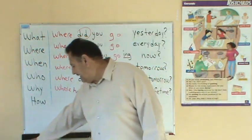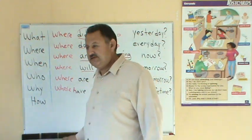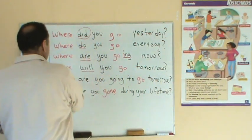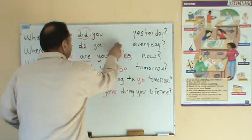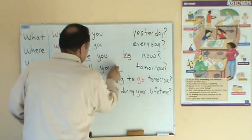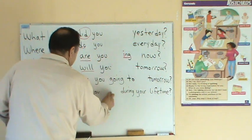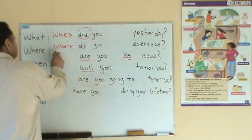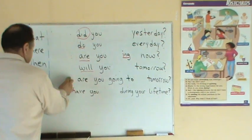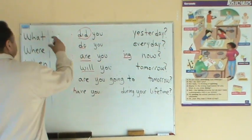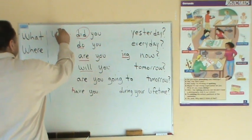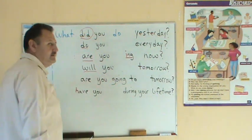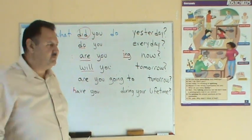And we can change the verbs and change the question words. This is 'go' — we use 'where.' But let's take another common verb and change the question words. What? What did you do yesterday? — ¿Qué hiciste ayer?